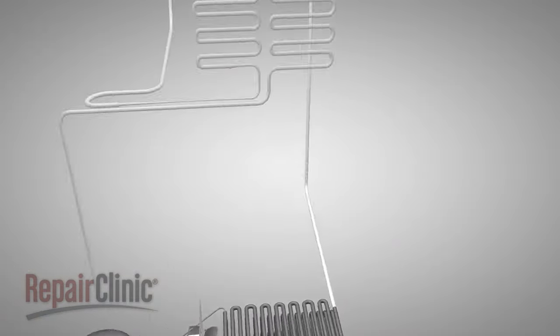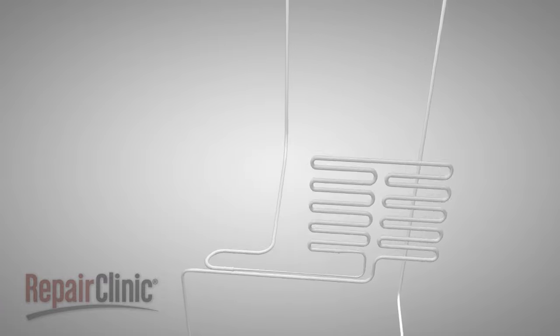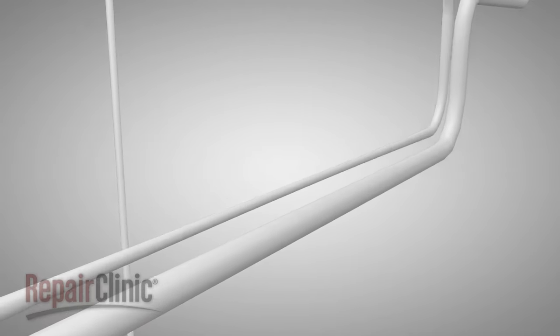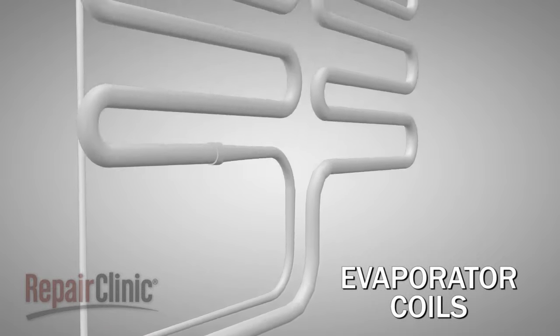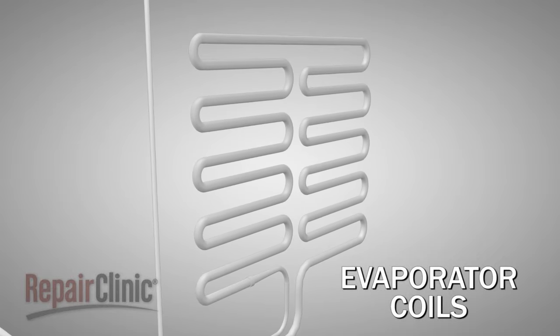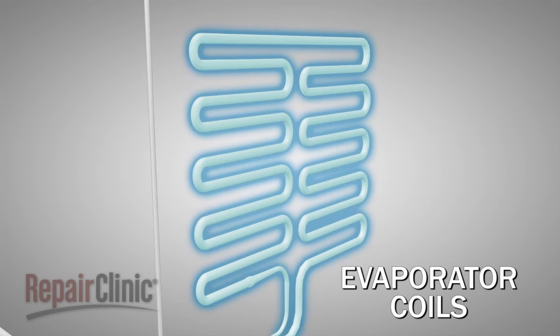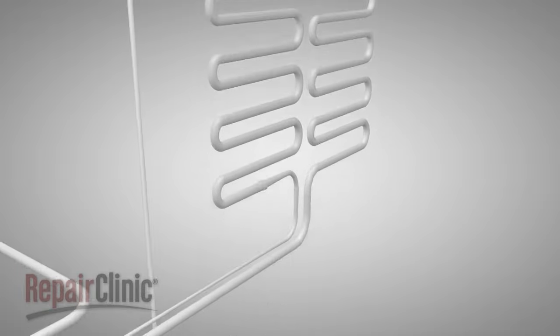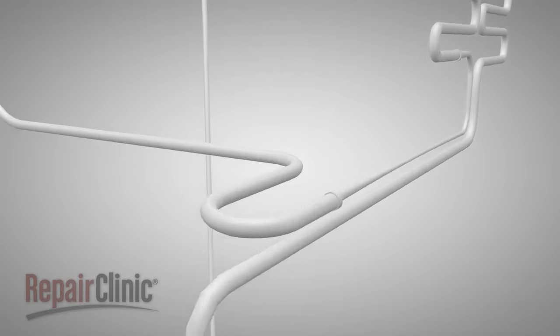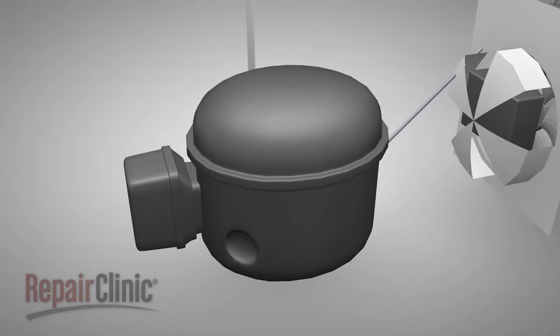Once the refrigerant has passed through the condenser coils and the capillary tube, it travels to the evaporator coils, which are located in the freezer. As the refrigerant liquid enters these coils, it expands into a gas, which makes the coils cold. The gas flows through the coils to a suction line attached to the compressor. The compressor converts the gas back into a liquid, and the cooling cycle continues.